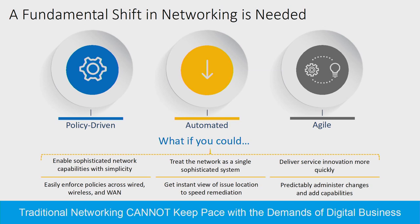Whether it's your corporate data center or your 30 branches, I want that same policy to follow all the way through, so I'm not giving my end users a different experience at every branch location. How do we do this? We need to automate this process — automation is the key. We take a single system, a controller, and push our configuration out via a centralized controller instead of touching every device individually. This gives us agility. Now I can create policy that's completely automated, stop chasing the chickens, and actually provide value back to the business.